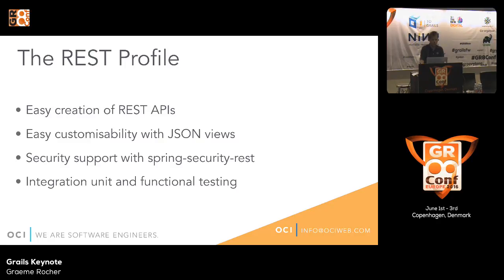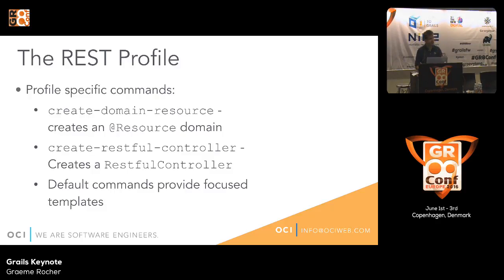One of the new features is the REST profile. It allows easy creation of REST APIs, and the customizability is key because it's all done through JSON views. The profile has support for security — it's easy to spin up security support via Spring Security REST. It also has built-in integration, unit, and functional testing. The profile adapts the command line to be specific to building REST APIs, so instead of generating GSP views, it generates JSON views. There are specific commands for creating REST controllers.